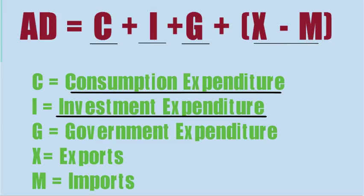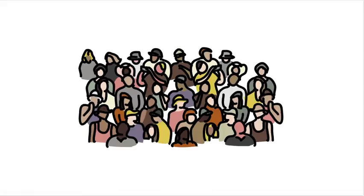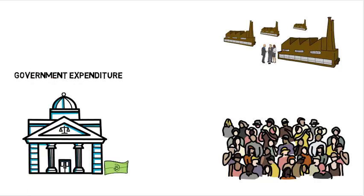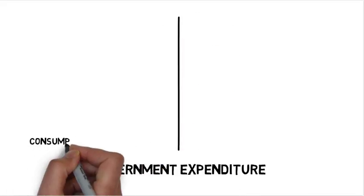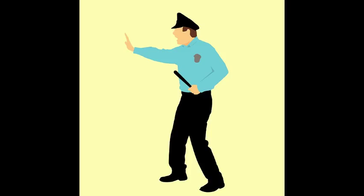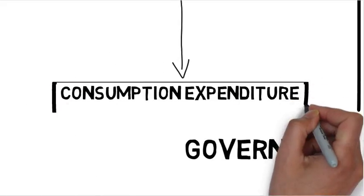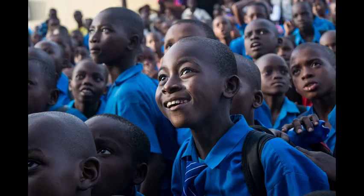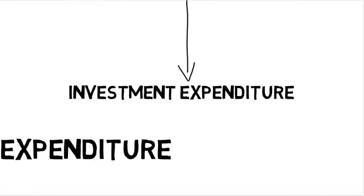The third component of aggregate demand is government expenditure. Like all other residents of the country, the government too purchases a lot of things from entrepreneurs, and hence government expenditure plays an important role in determining aggregate demand. Like normal residents, government too has consumption expenditure and investment expenditure. All expenditure that helps for direct consumption like electricity, water, parks, police services, etc. is government's consumption expenditure. Expenditure done on projects that add to the country's capital assets like transport, communication, irrigation, education, banking, etc. is investment expenditure.